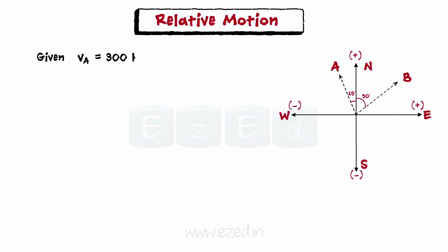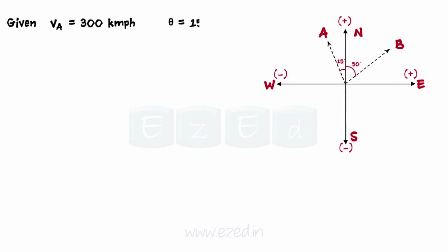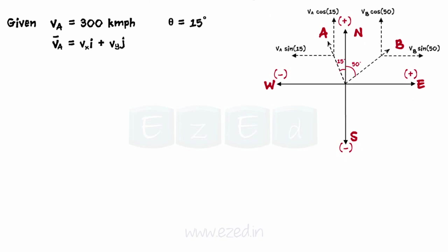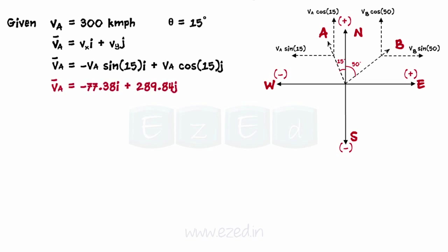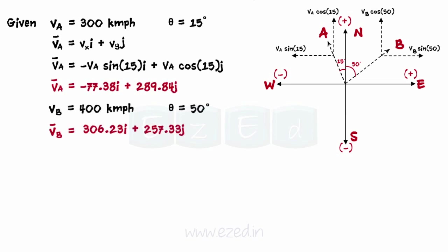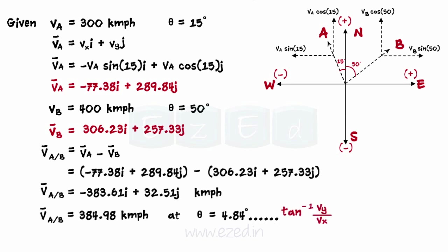Given that the velocity VA is 300 km/h at 15 degrees west of north. VA bar is given as VX·i + VY·j, where VX is given by VA·sin15 and VY is given by VA·cos15. The sin component will be negative as per the coordinate system. On evaluating, we get VA as shown. Similarly, evaluating for VB, we get the equation as shown. Therefore, the relative velocity of train A with respect to train B is given by the relation shown, and on evaluating we get the relative velocity of train A with respect to B.